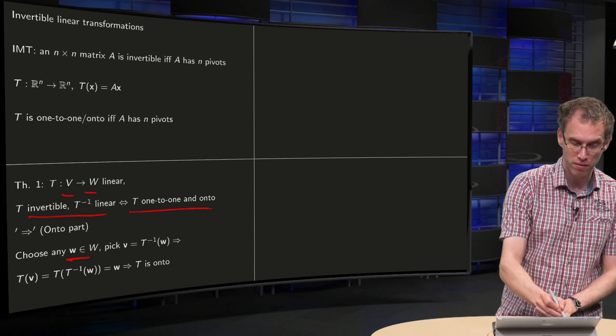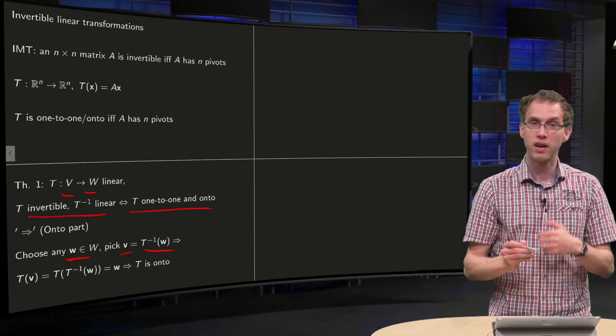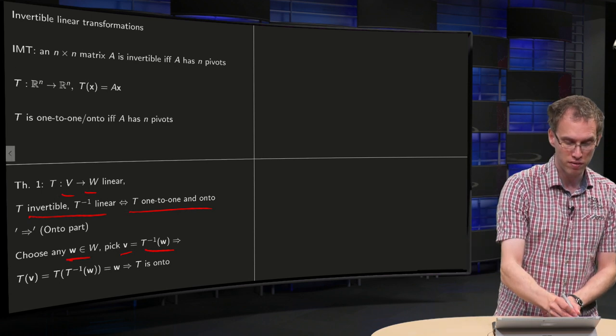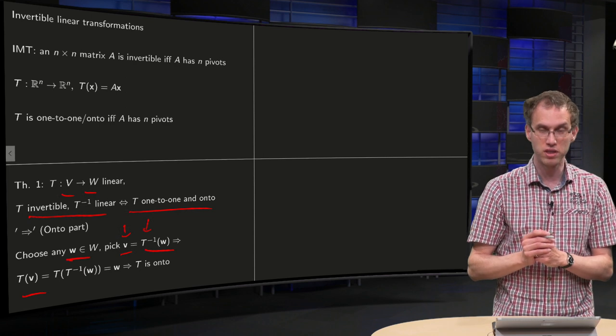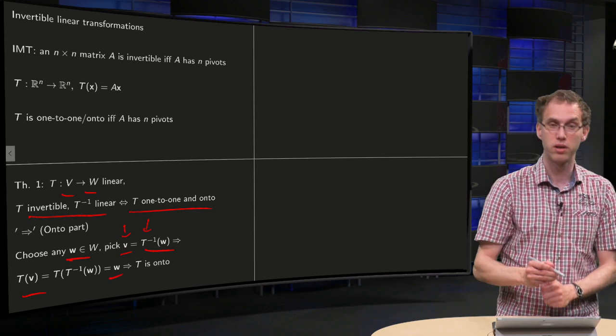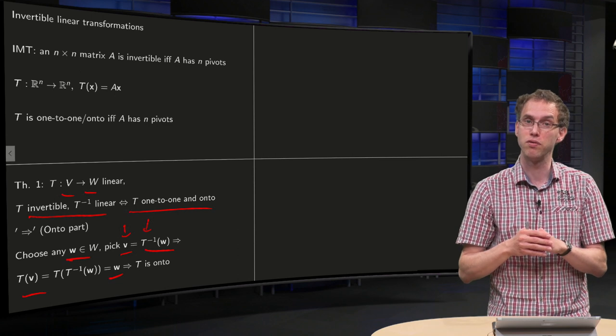So we pick v equals T inverse of w. And then we know that T(v), take the T here and there, T of T inverse of w equals w, they cancel out, that's what an inverse does.